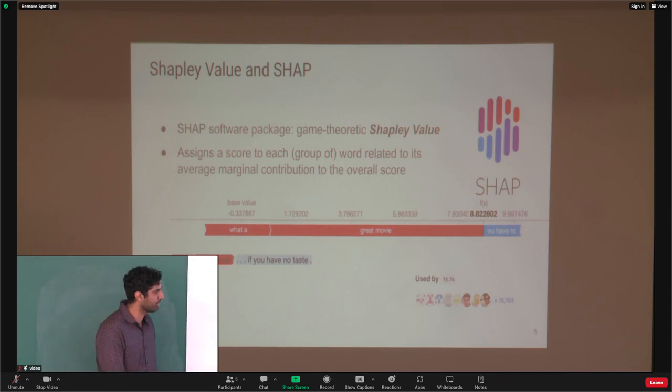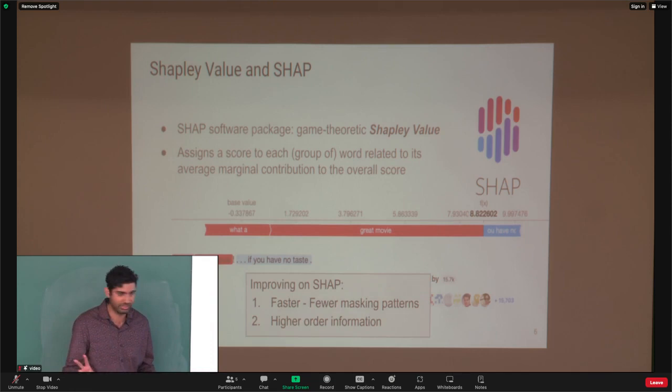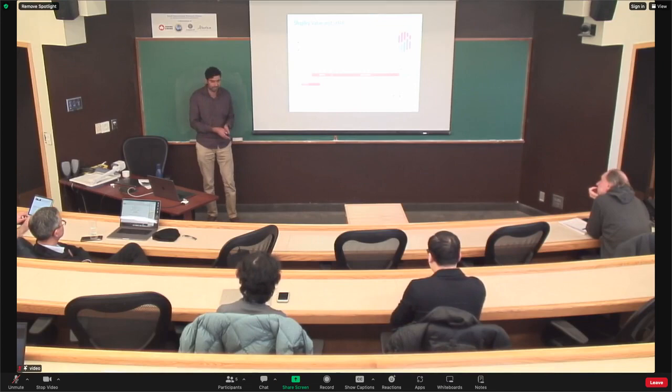We were looking at this and seeing if there's any way we can improve on this approach. Two things I think we can do: one is to make it faster — can we use fewer overall masking patterns? And two, can we extract higher-order information? Because SHAP is kind of building a first-order model.